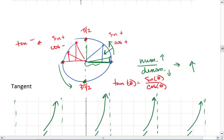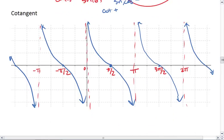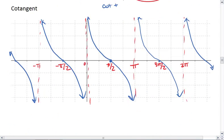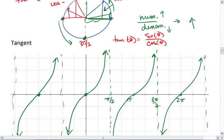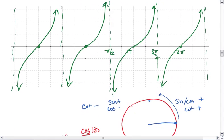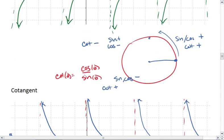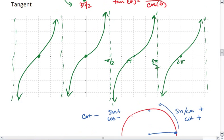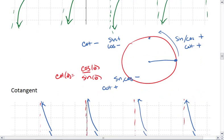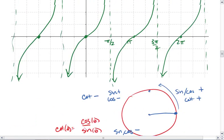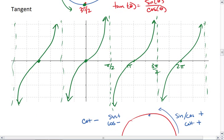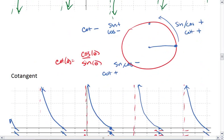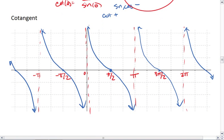Looking between cotangent and tangent, they have the same general shape, but reflected and also shifted a quarter of a period to the side. So tangent passes through the origin just like sine passes through the origin. And cotangent starts up high, just like cosine starts up high.